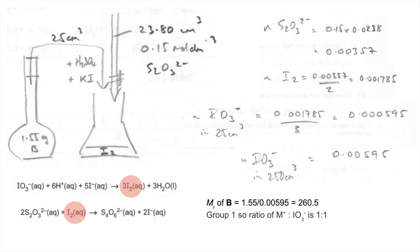It's a group 1 salt. So the ratio of the metal ion, M⁺ to IO₃⁻, is 1 to 1. So therefore, the MR of M⁺, the metal in the salt, is going to be the MR minus the MR of IO₃⁻. And that gives us 85.6 for the metal, so it's rubidium. So B is rubidium iodate 5.